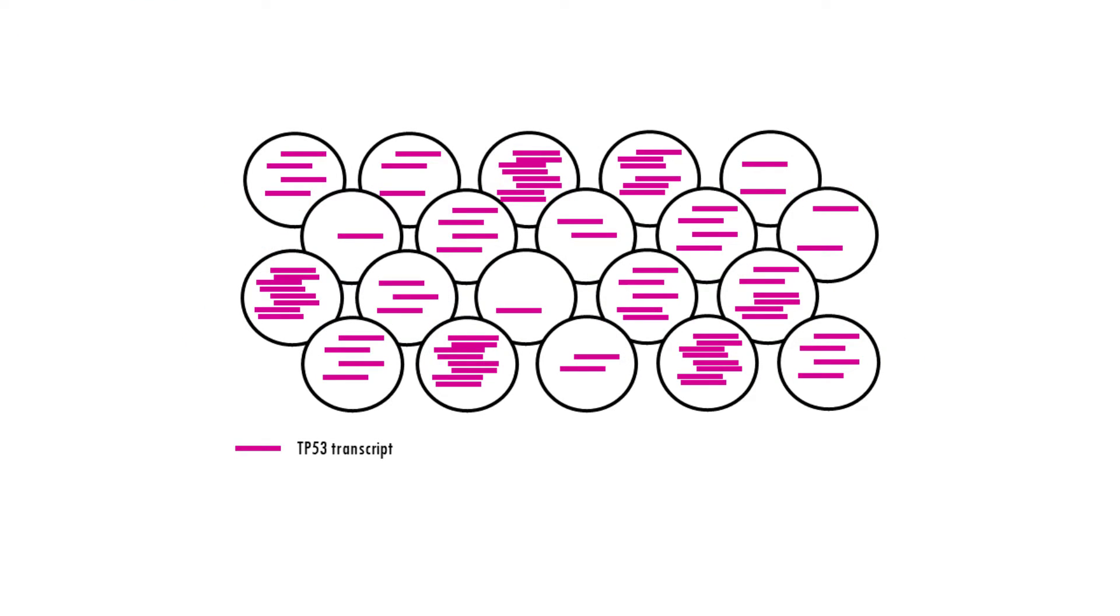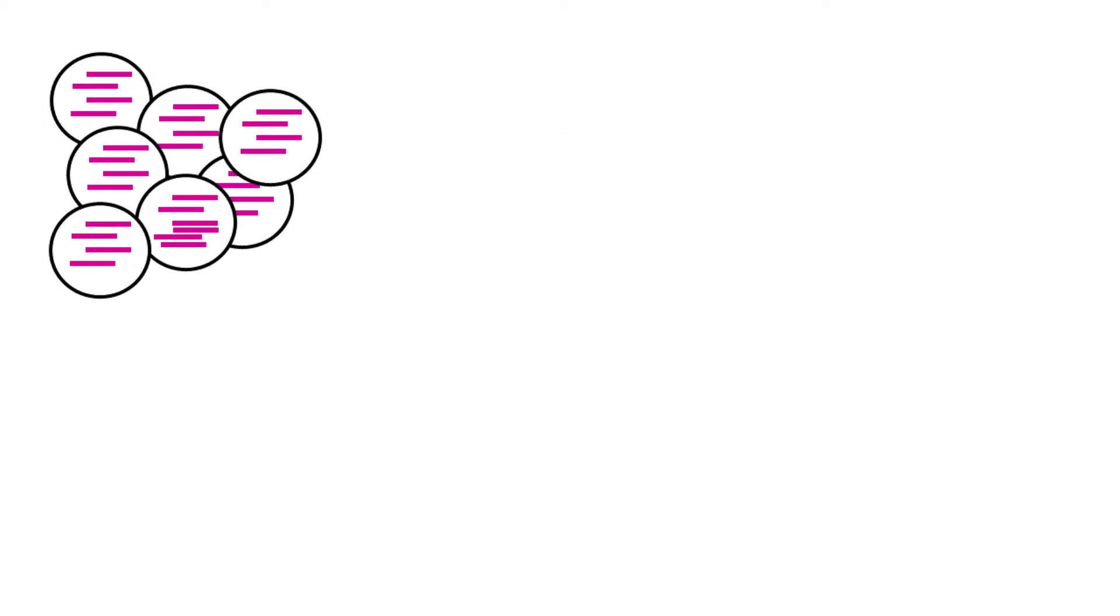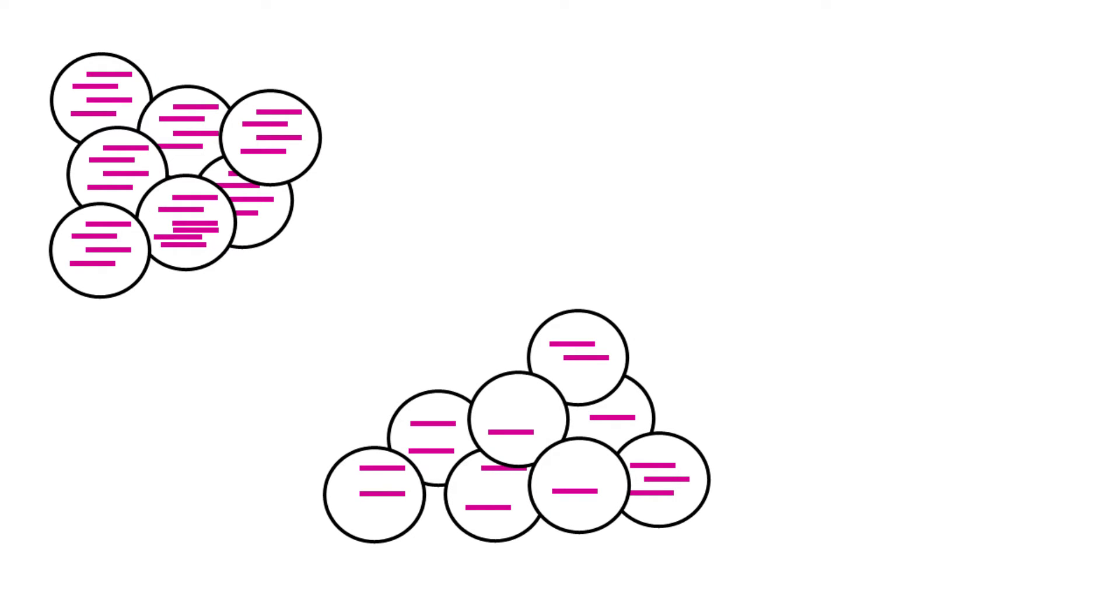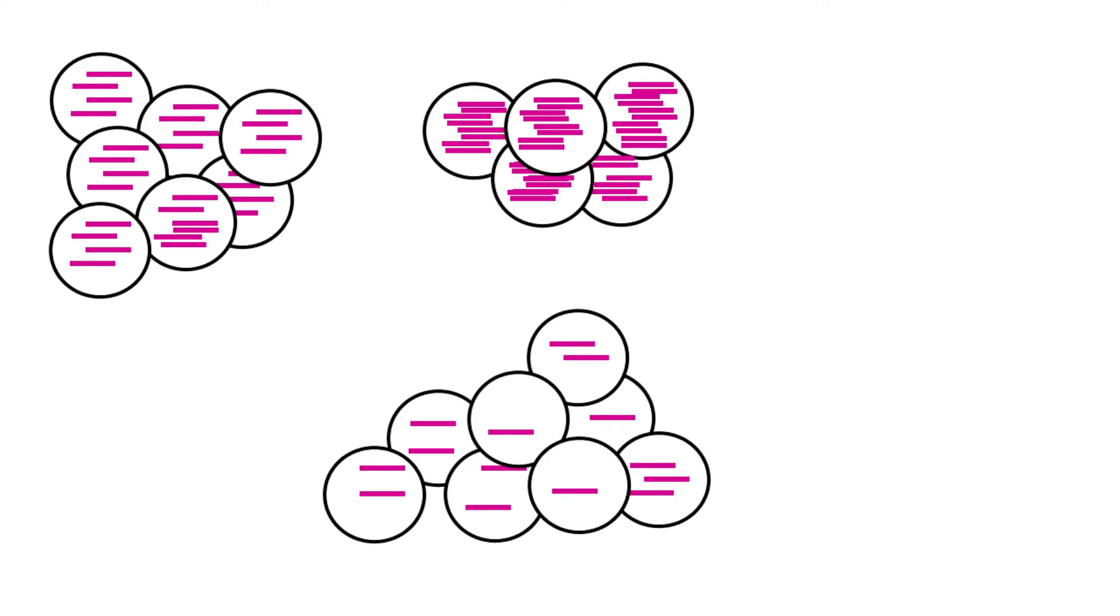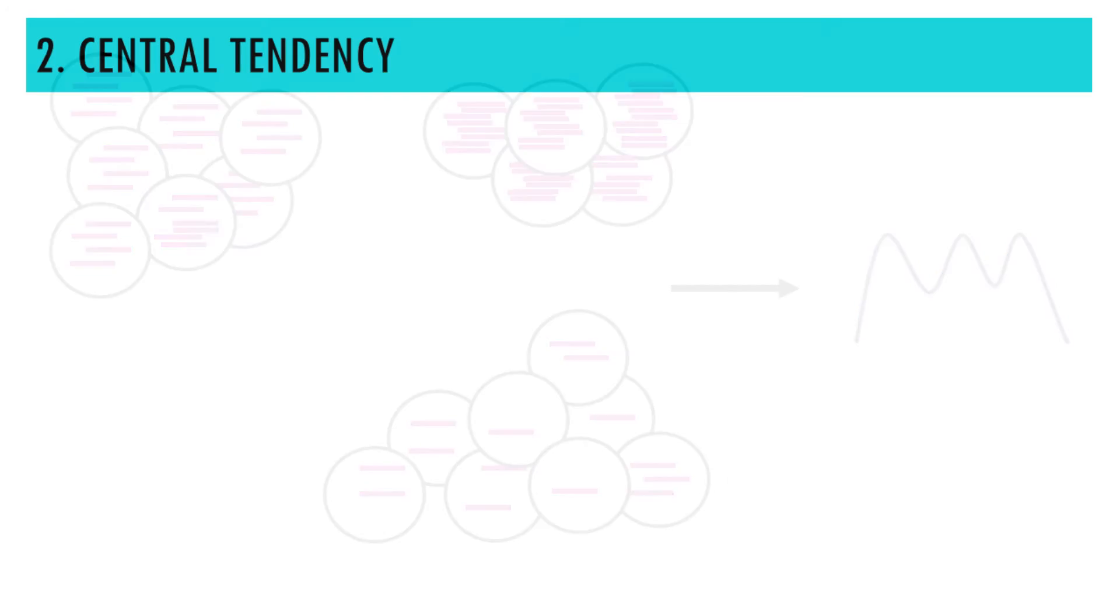For example, in our cancer tissue, we might have three clusters of cells based on TP53 expression. Cells with very little TP53 expression, maybe they have a deletion and lost one of the copies. Cells with normal expression levels, and cells that perhaps duplicated their DNA and have an overexpression of TP53. So we can identify three distinct peaks of TP53 expression. Nice!